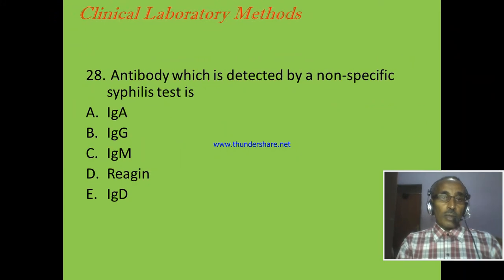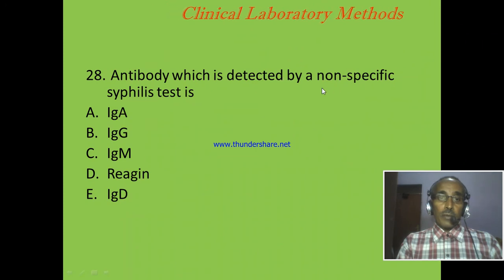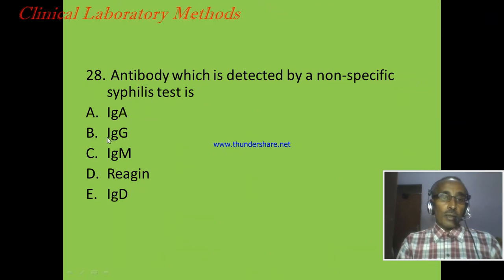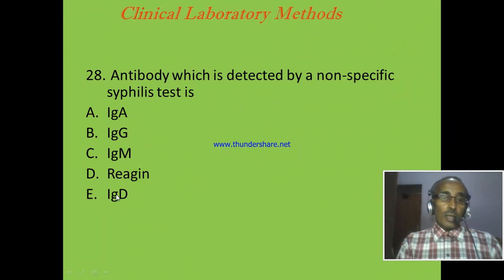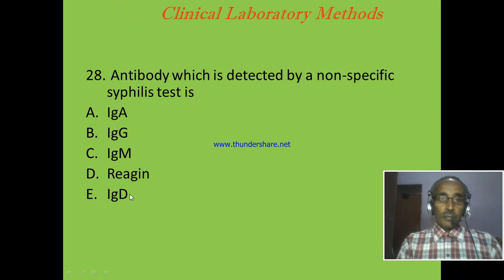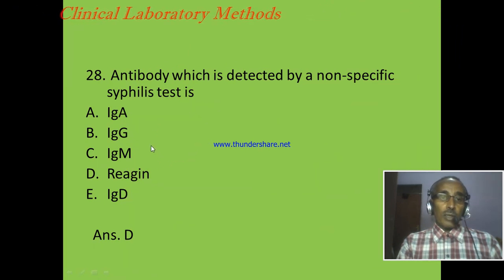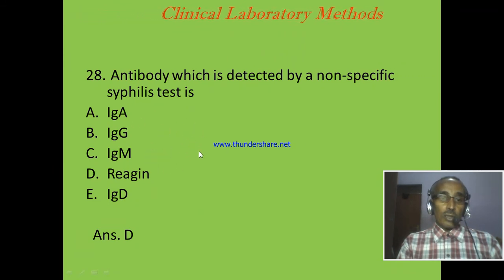Question 28: The antibody detected by a non-specific syphilis test is known as — A: IgA, B: IgT, C: IgM, D: Reagin, E: IgT. The correct answer is D: Reagin, because Reagin is a non-specific antibody which is produced during syphilis infection and other conditions.